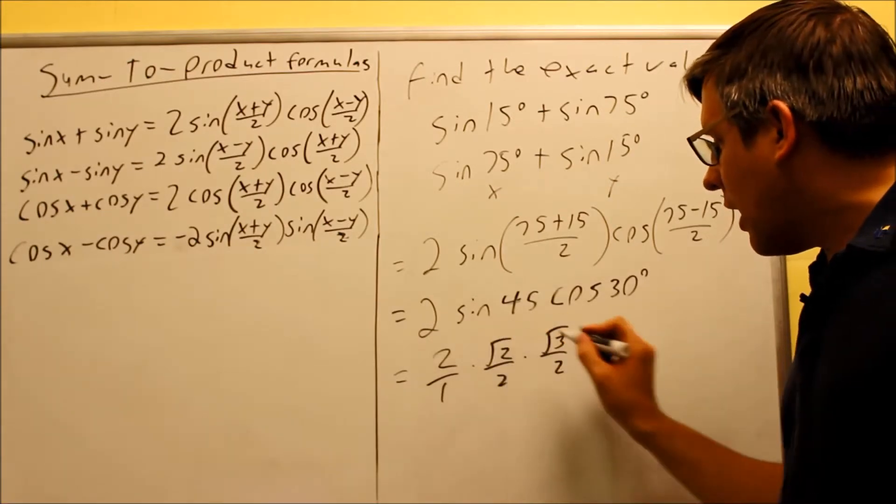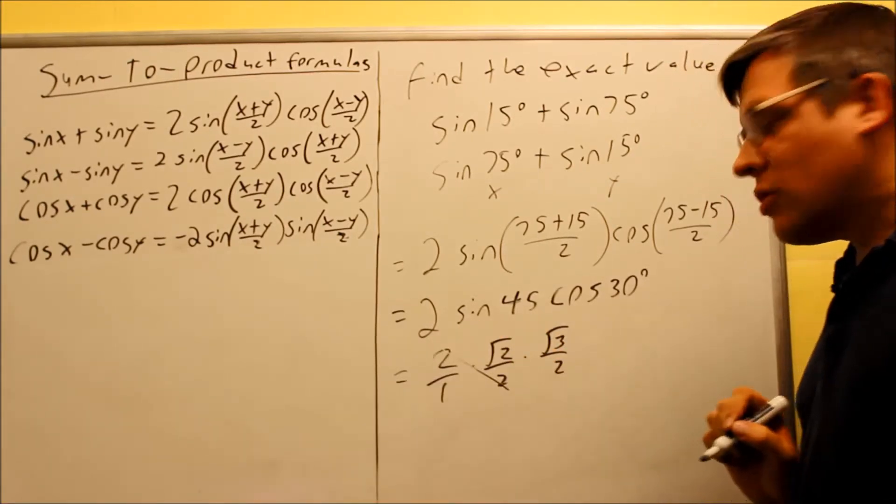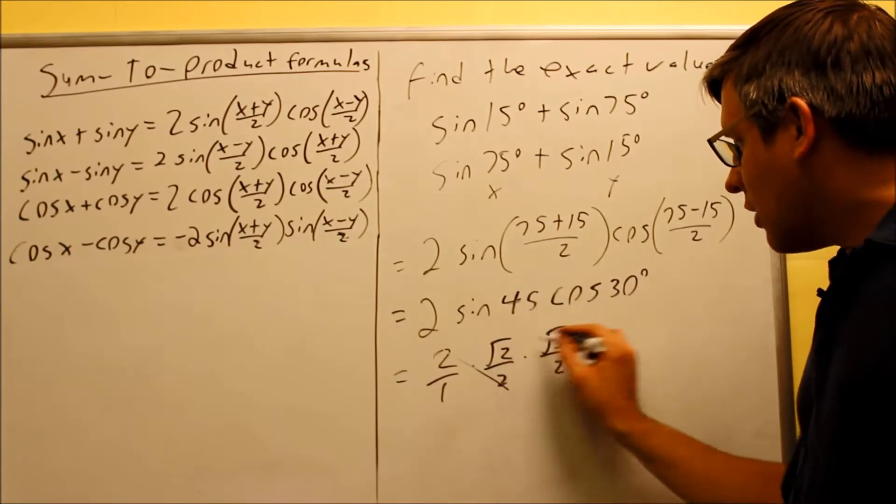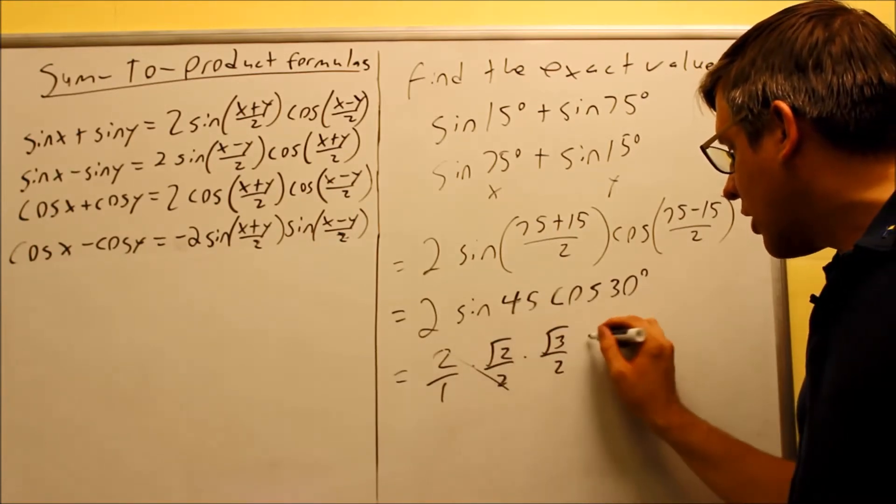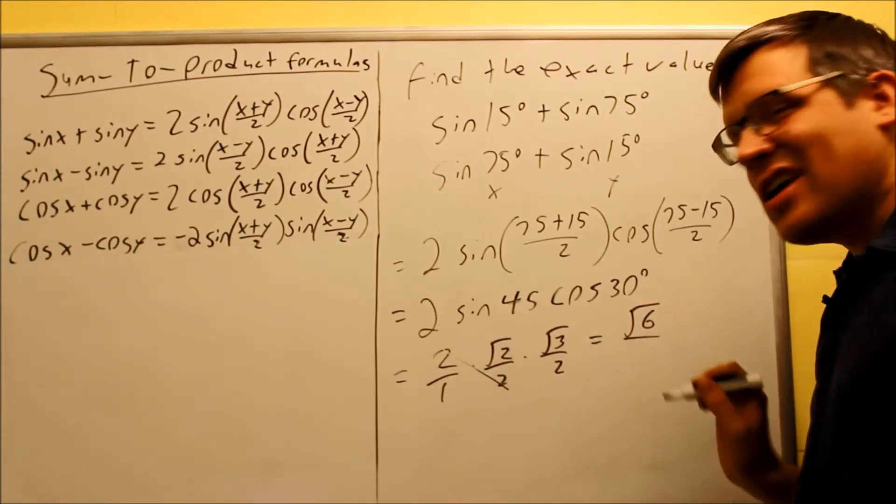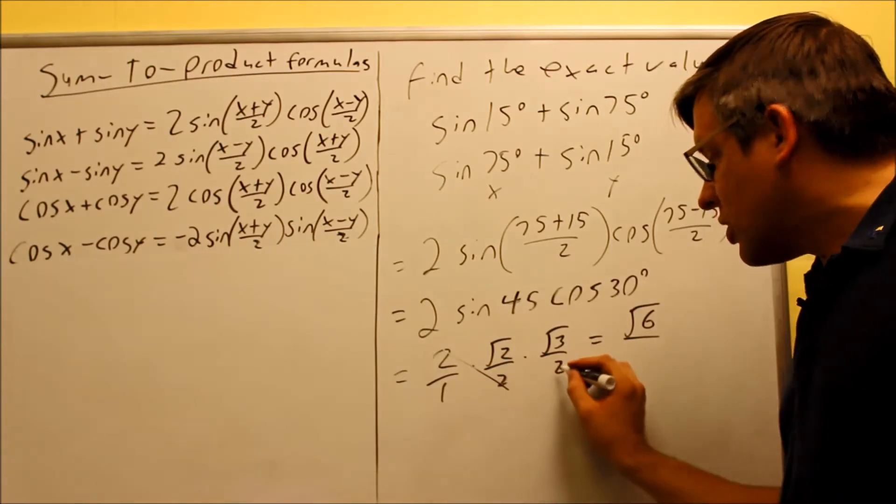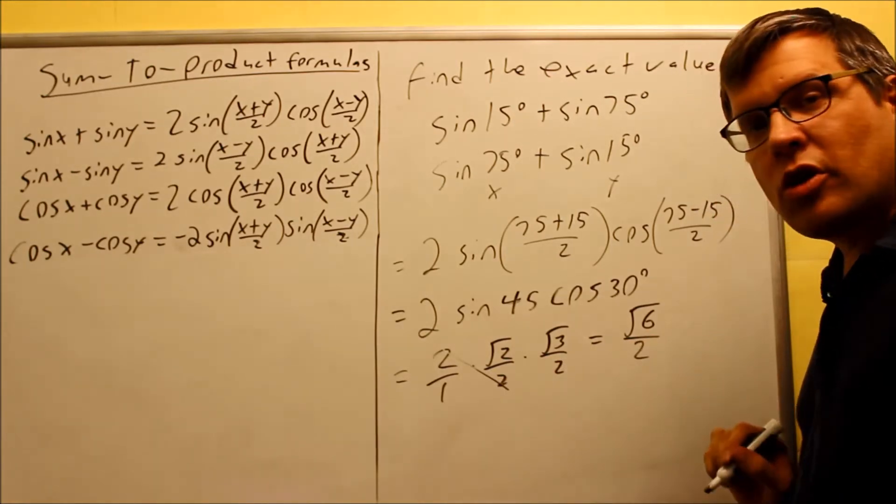Now what I can do is, first of all, cancel out the 2's that are there. And then for the part that's left, if I multiply across the top, I get the square root of 6. On the bottom I have 1 times 2. So I get square root of 6 over 2.